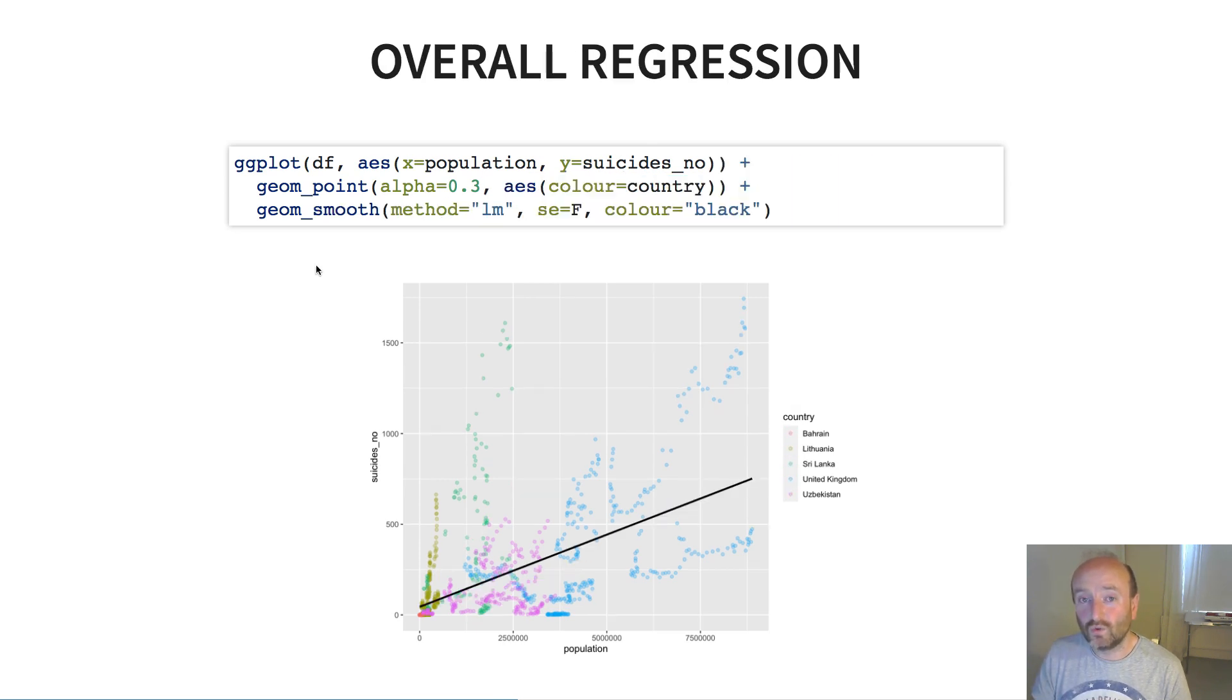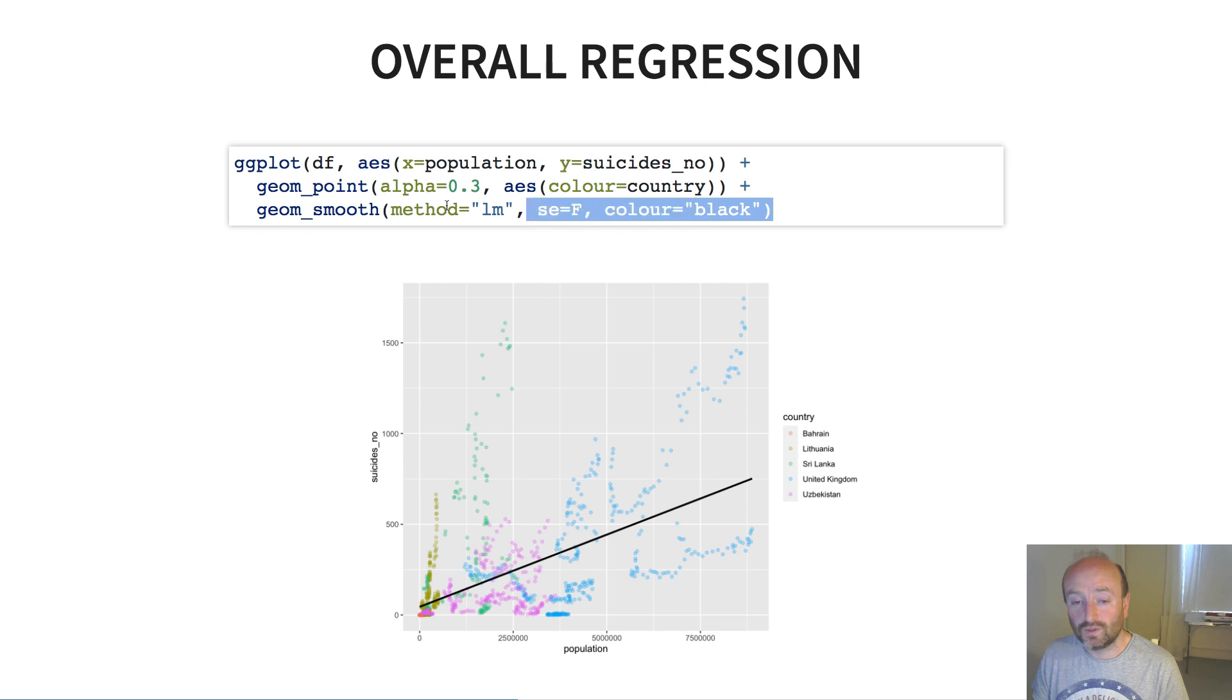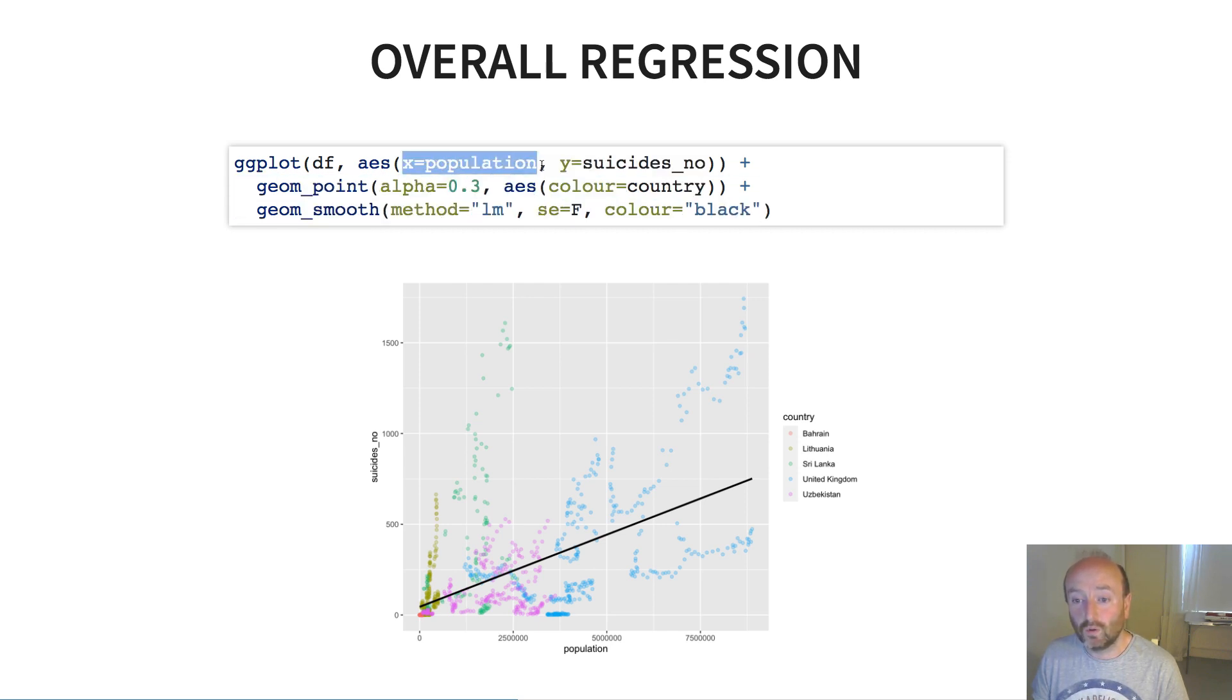If instead, I wanted to do an overall regression where instead of plotting one regression line for each of the countries, I did that for all the data, then effectively, all I need to do is I take color equals country from the base aesthetic here, and I use it only where I want it to be used. So here I put it in the geom_point geom. And so now geom_point is the only geom here which is going to do things according to country. Because whilst the base call to ggplot has an aesthetic, if I had color equals country here, that would be inherited by all the other geoms. But here, because I've defined it in a subsequent geom, then it's not inherited by any of the other ones. And so geom_smooth, the only aesthetics that that inherits are the population count and the count of suicides. And so now it doesn't really know about country, geom_smooth, and so it just plots a single regression line here.